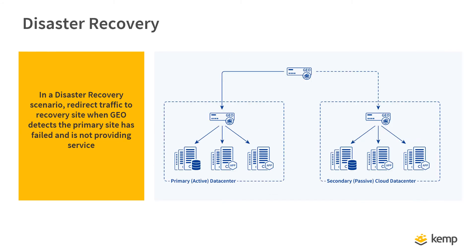In a disaster recovery scenario, KEMP Geo is totally transparent to the clients. When configured for disaster recovery operation, a primary site failure will immediately cause traffic to be directed to the recovery site without any changes to client configuration or network routes.